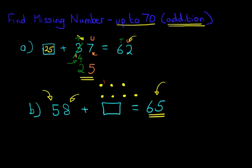Let's count them. 1, 2, 3, 4, 5, 6, and 7. So therefore, the answer is 7. 58 plus 7 equals 65.